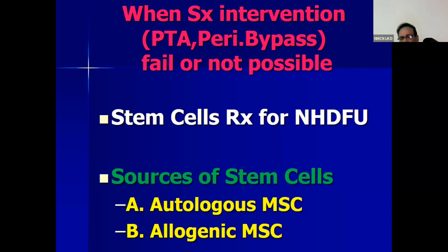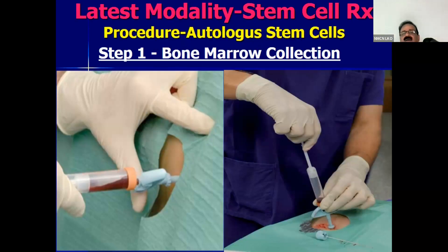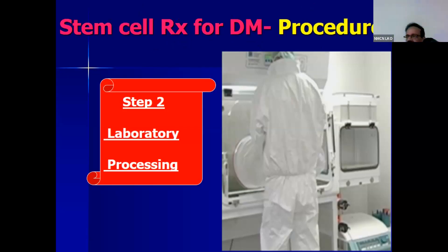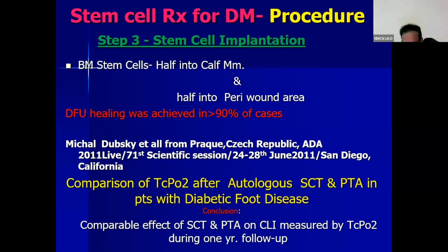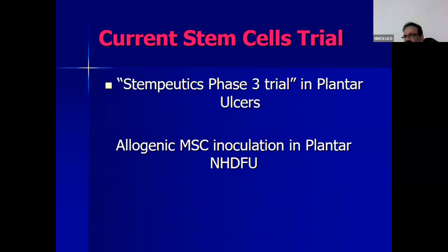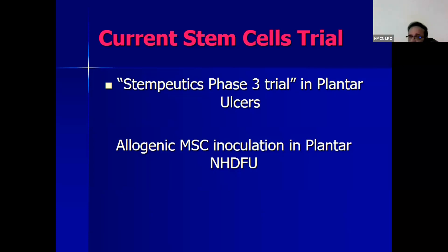In our procedure at BLK Max, autologous stem cells are taken from the bone marrow of the patient, developed in the laboratory, and then injected — half into the calf muscles and half around the peripopliteal area. Diabetic foot ulcers were found to heal in 90% of cases. This is reserved only for vascular ulcers where angioplasty or bypass is not possible. Insurance companies have started covering this. It costs around 1 lakh 95 thousand rupees — if the patient weighs more than 62 kg, 200 million mesenchymal stem cells are given; if less, 150 million. With hospital charges it comes to about two lakh rupees total. Insurance companies are now agreeing to cover it in cases of angioplasty or bypass failure.